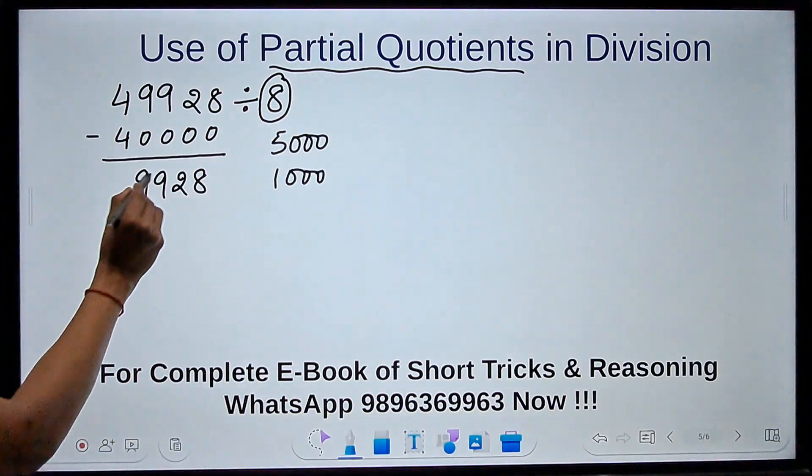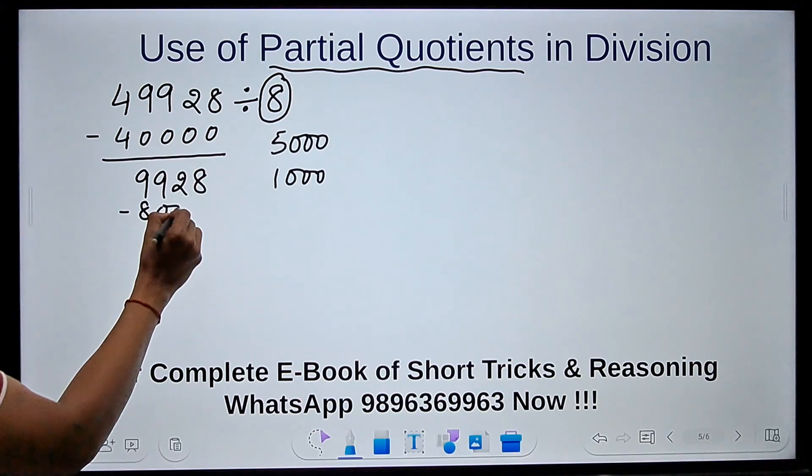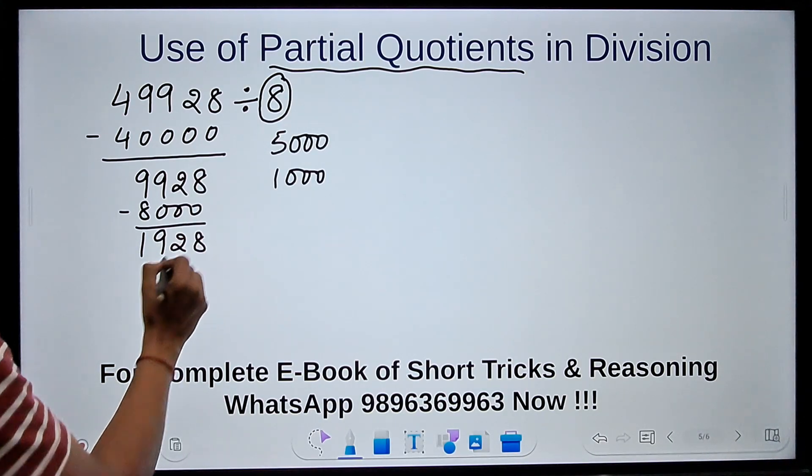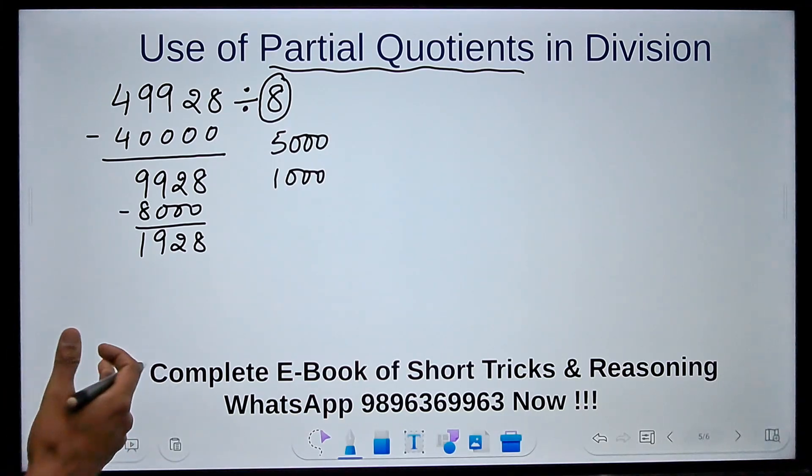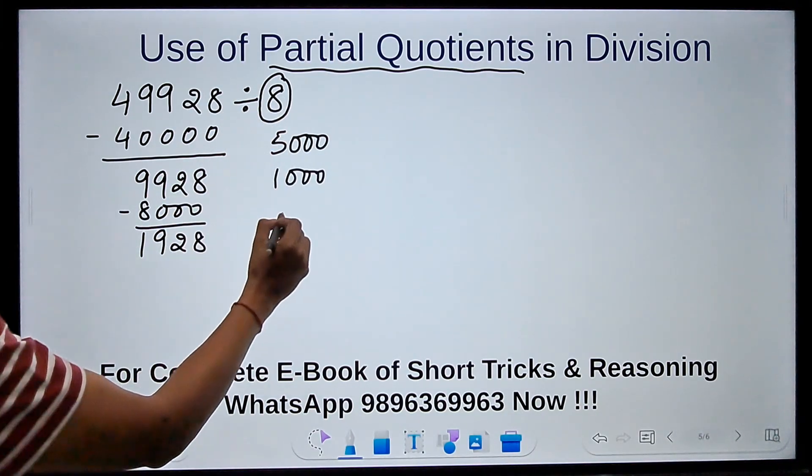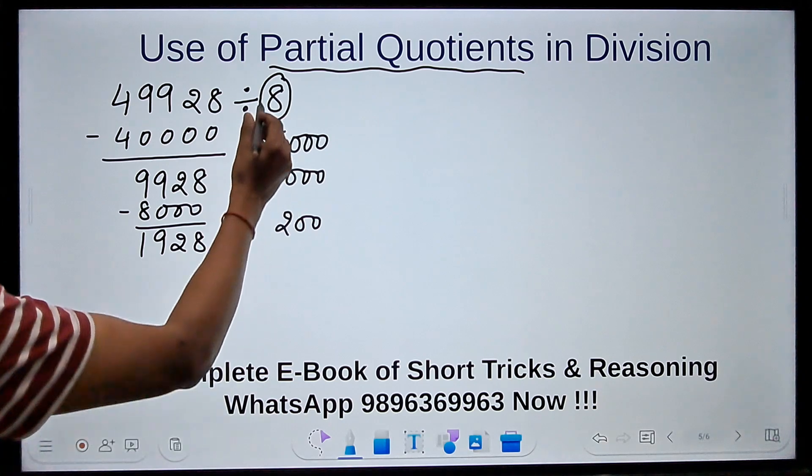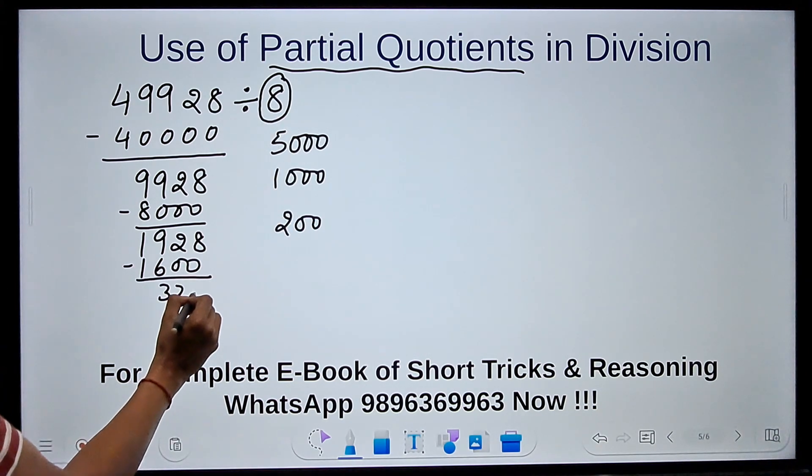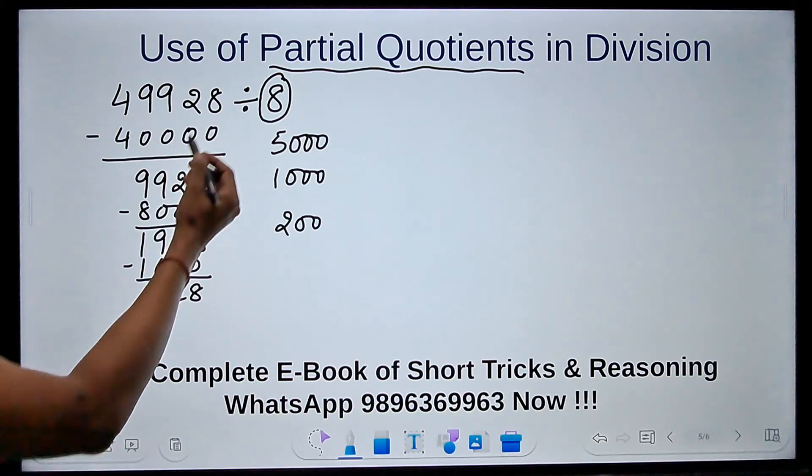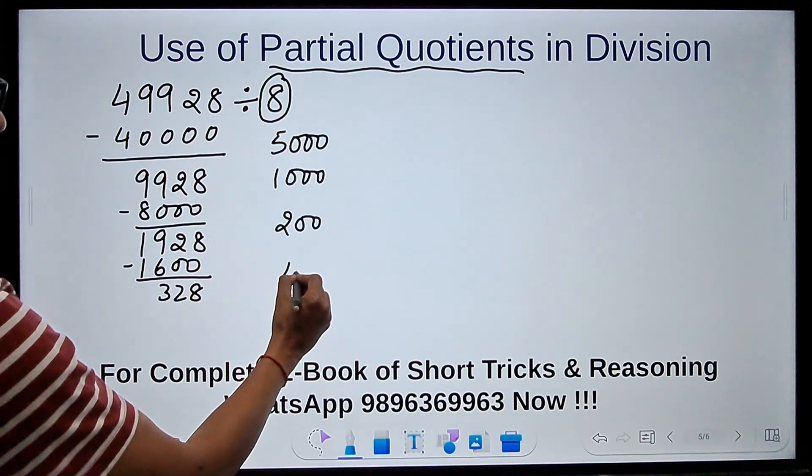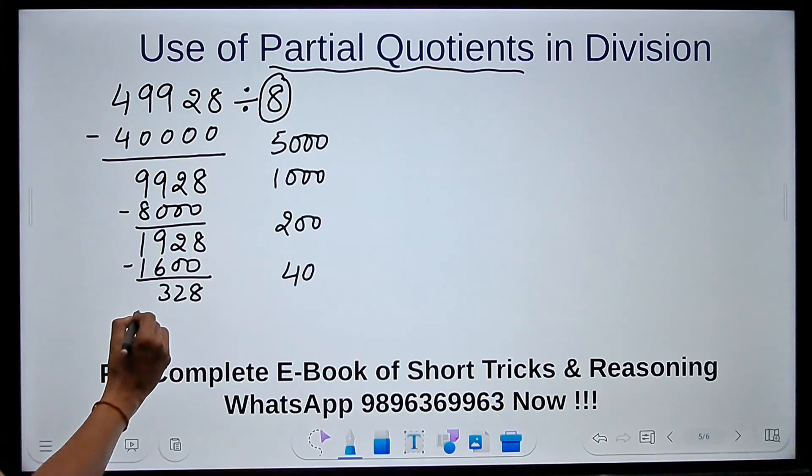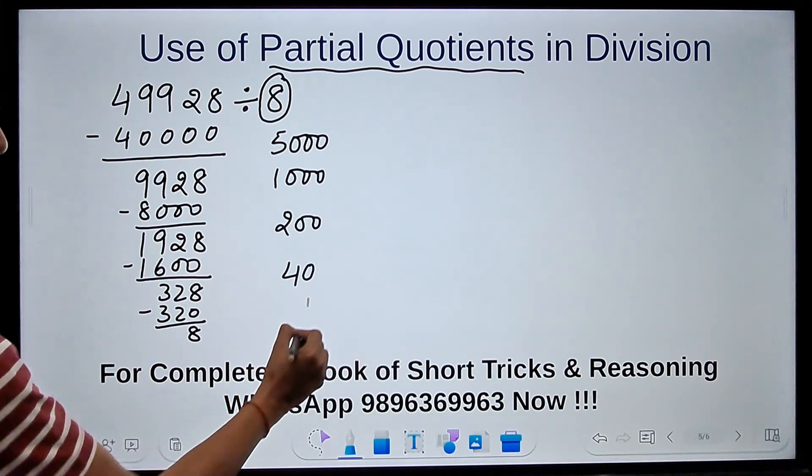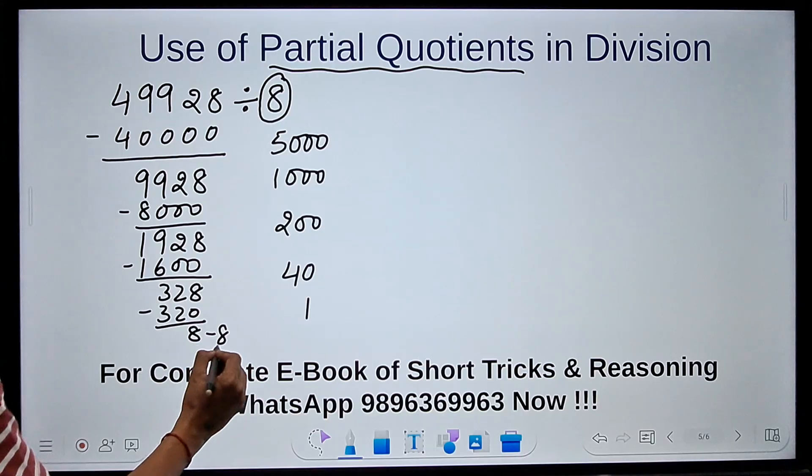Likewise, if I do 8 into 1000, I will get 8000. If I subtract 8000 from this, this becomes 1928. Similarly, I can do 8 times 200 is 1600, so subtract 1600, you get 328. And I can do 8 times 40 is 320, so subtract 320, I get 8. And 8 times 1 gets me 8, so the remainder is 0.